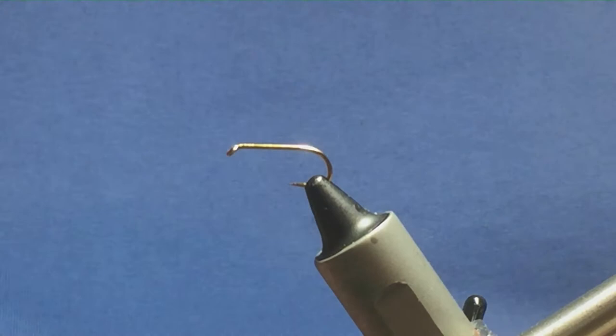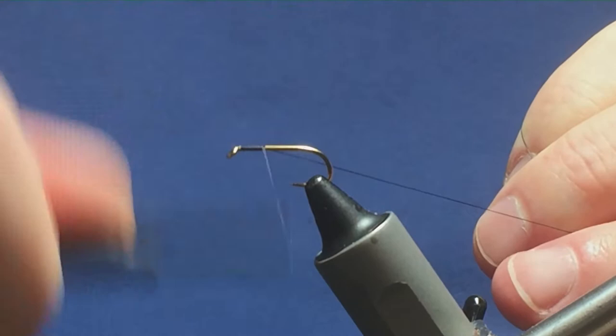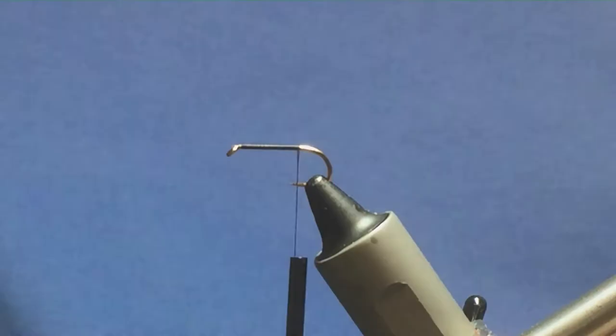The thread that I'm going to use is Ultra Thread in 70 in black by UTC. So I'm just going to come in and get the thread started behind the eye of the hook. Just knock on a few turns and then remove the waste tag of the thread.